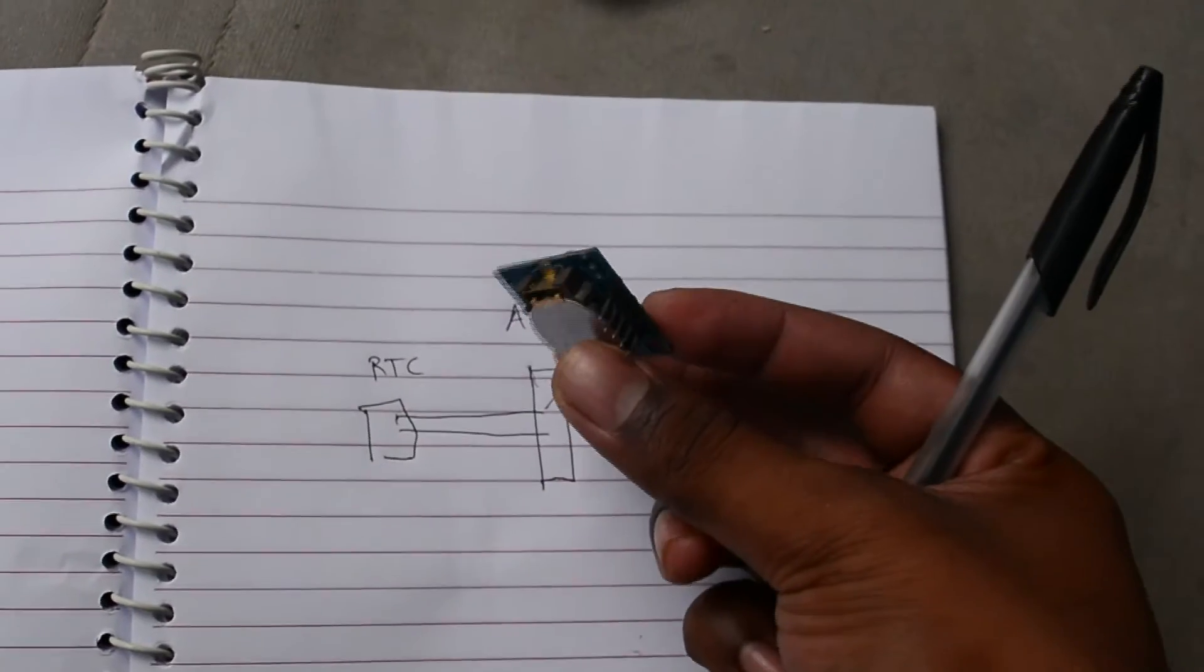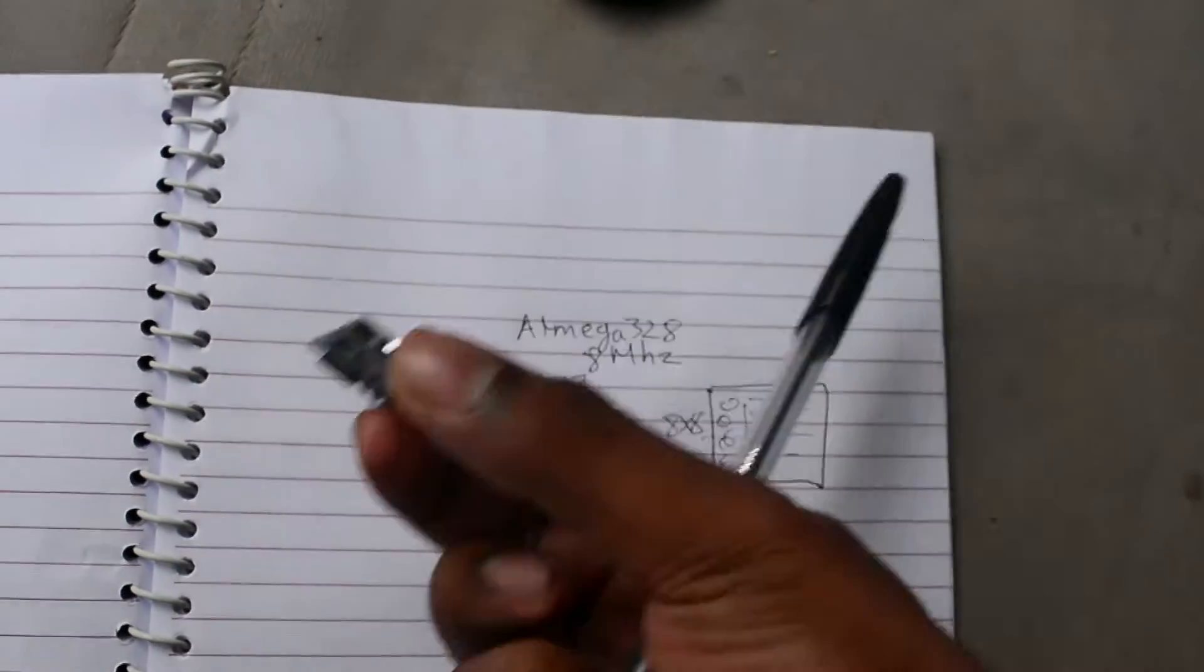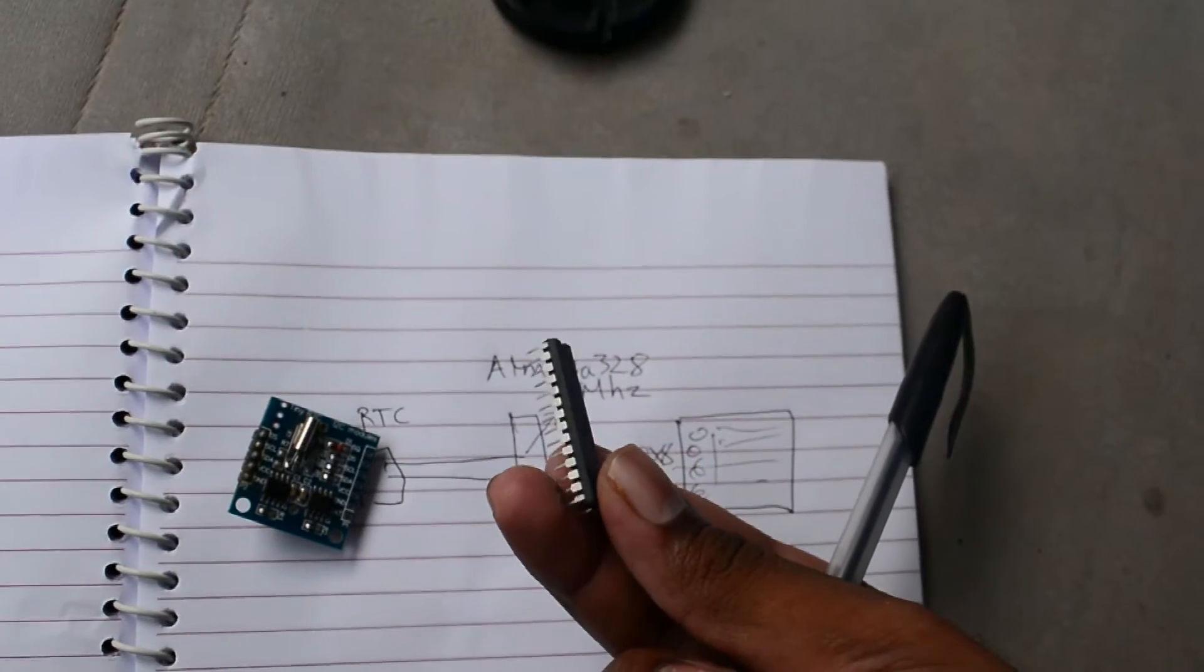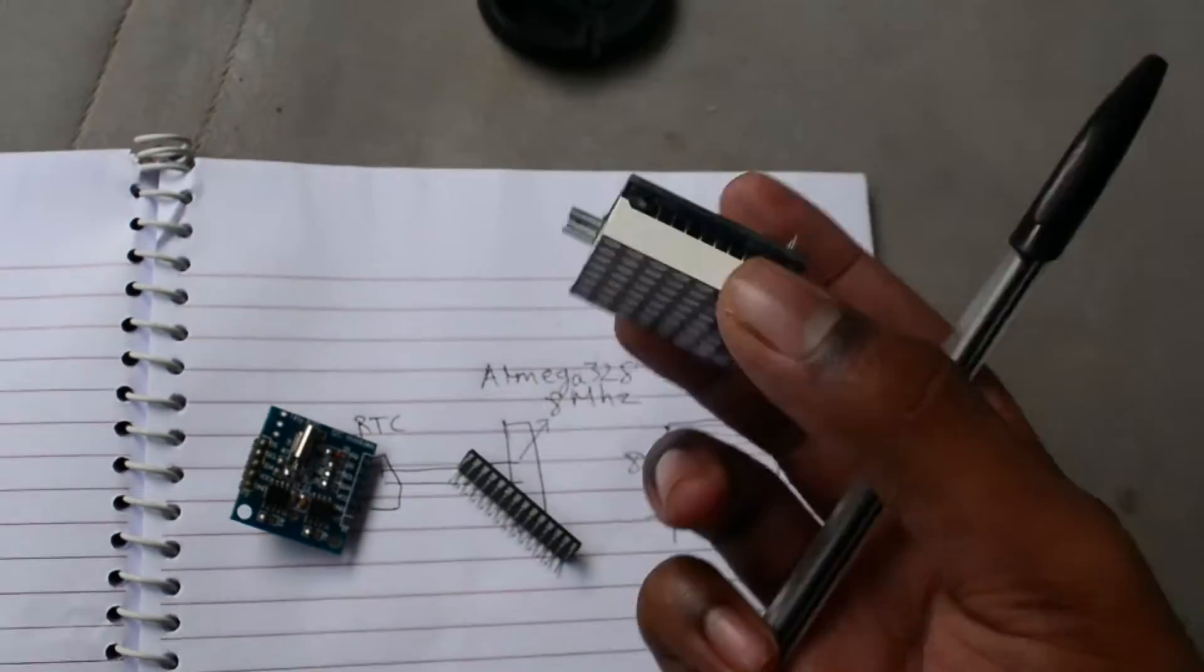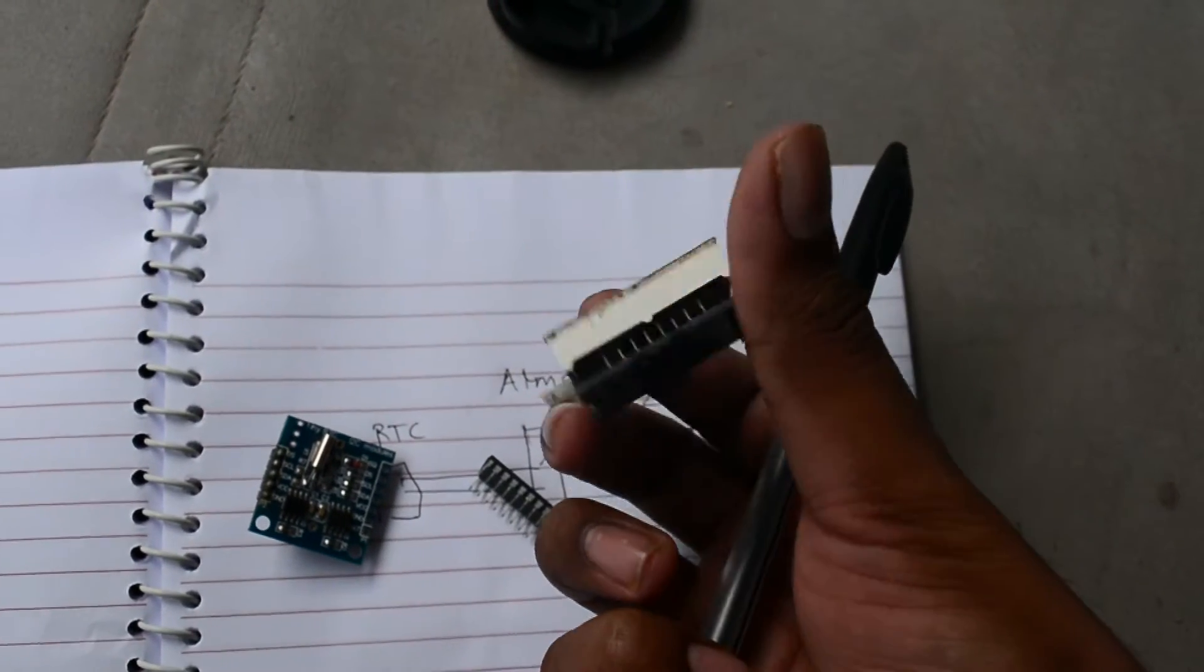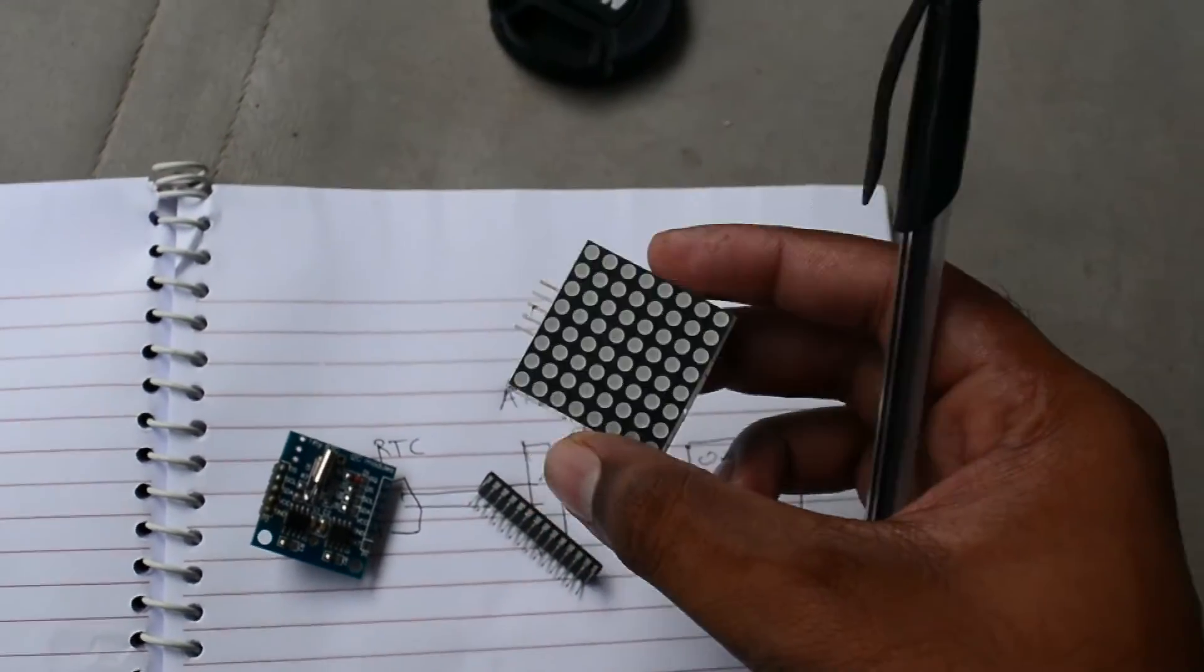This is the RTC module which keeps the time. And this is the ATmega 328. And this is an LED matrix. It has got 8x8, that is 64 LEDs.